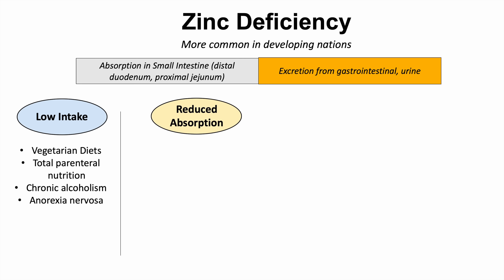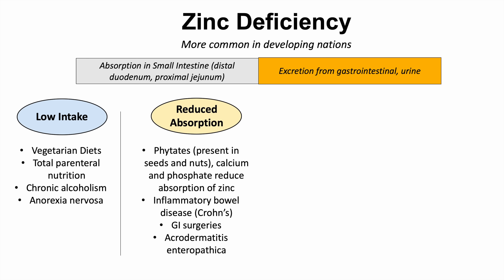Reduced absorption is another category. Phytates present in seeds and nuts can inhibit zinc absorption, as can calcium and phosphate. Inflammatory bowel disease like Crohn's disease, gastrointestinal surgeries that reduce absorptive surface area, and a rare inherited condition called acrodermatitis enteropathica can also reduce zinc absorption.